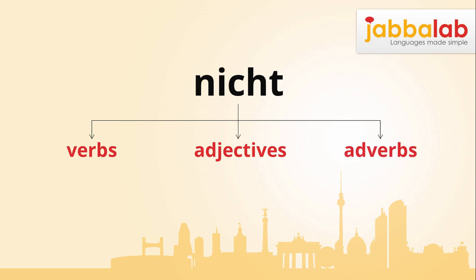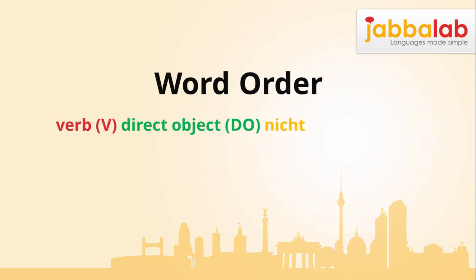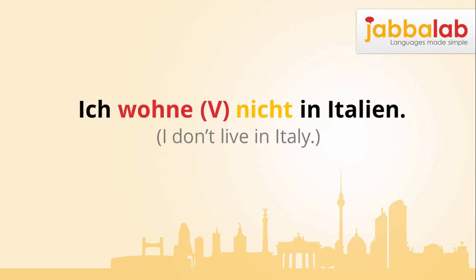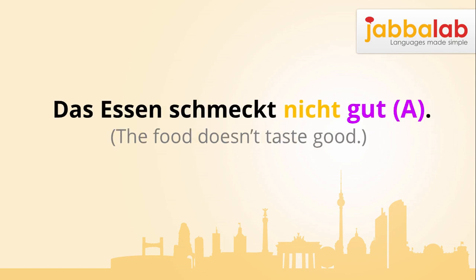The word 'nicht' is straightforward as its form never changes. To use it in a sentence, you need to understand the word order — it usually comes straight after an affected verb or direct object, but often comes before the affected adjective. For example: 'ich wohne nicht in Italien', 'ich kann das Bier nicht trinken', 'das Essen schmeckt nicht gut'.